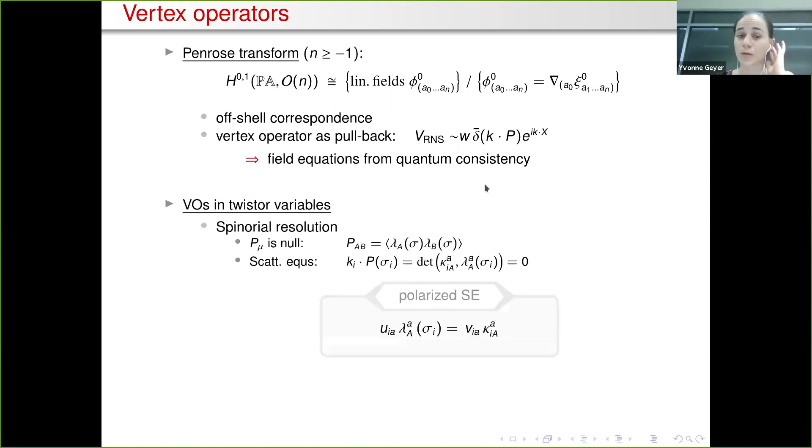For example, for the RNS vertex operator we find that it takes the form of del-bar K dot P e^(iK·X) for a momentum eigenstate. If we want to lift this to the twistorial model, one way to do this is to use the spinorial resolution for the momentum P that we had from the correspondence between the RNS and the twistorial model. If you remember that P is lambda lambda, then the constraint delta-bar K dot P that appeared in the RNS vertex operator - you can see that now this takes the form that the determinant of kappa, where kappa is the spinor for the particle, and lambda has to vanish. In other words, up to a little group rotation, lambda and kappa are the same.